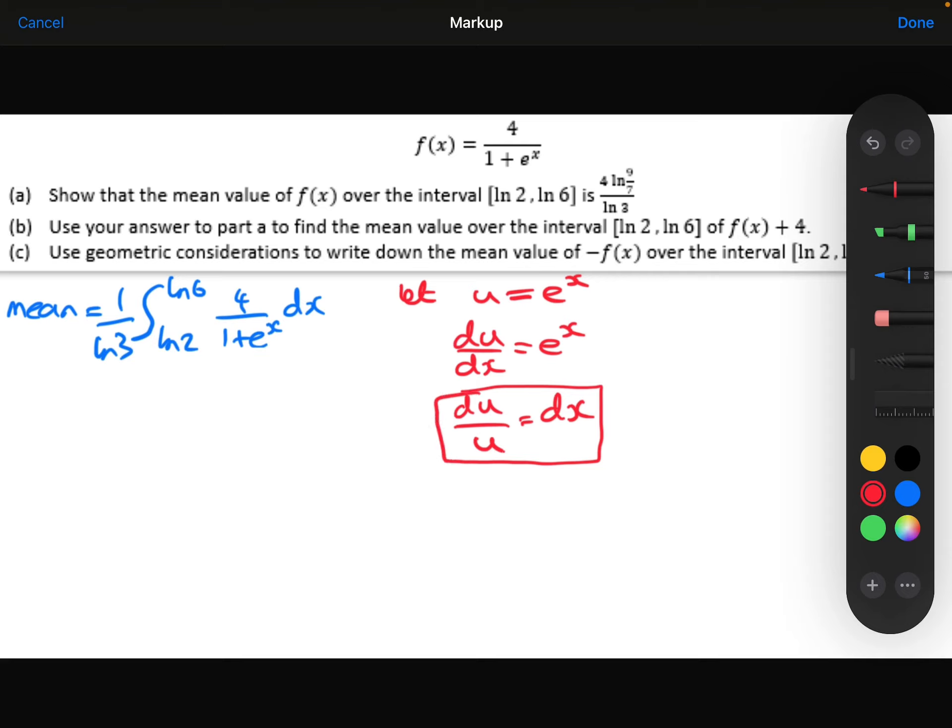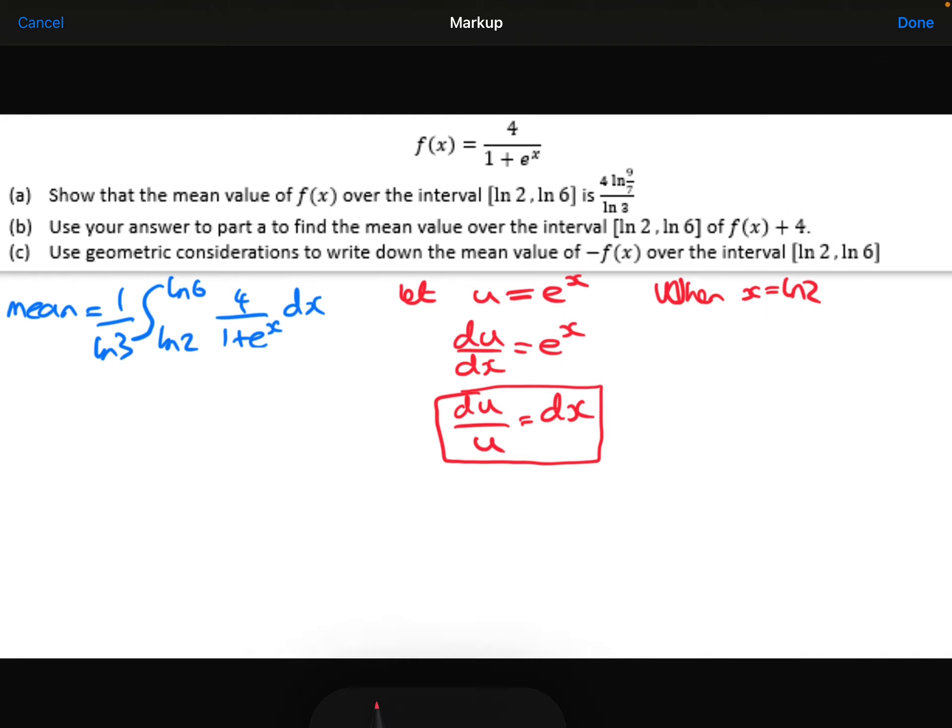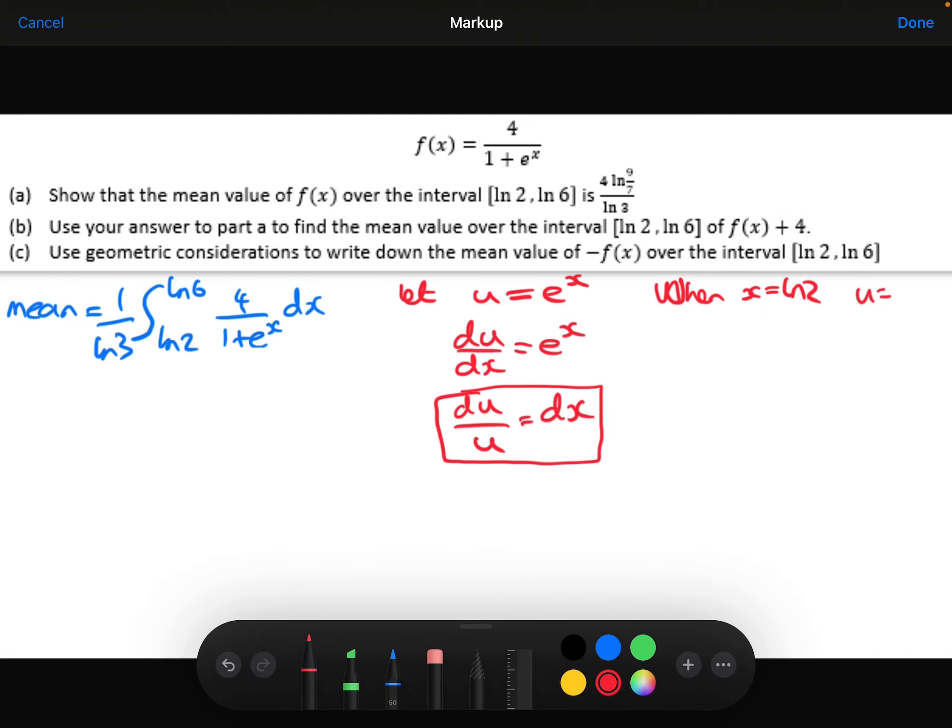We need to change the limits as well. So when x equals ln 2, u equals e to the ln 2, which is 2. When x equals ln 6, u equals e to the ln 6, which is 6.